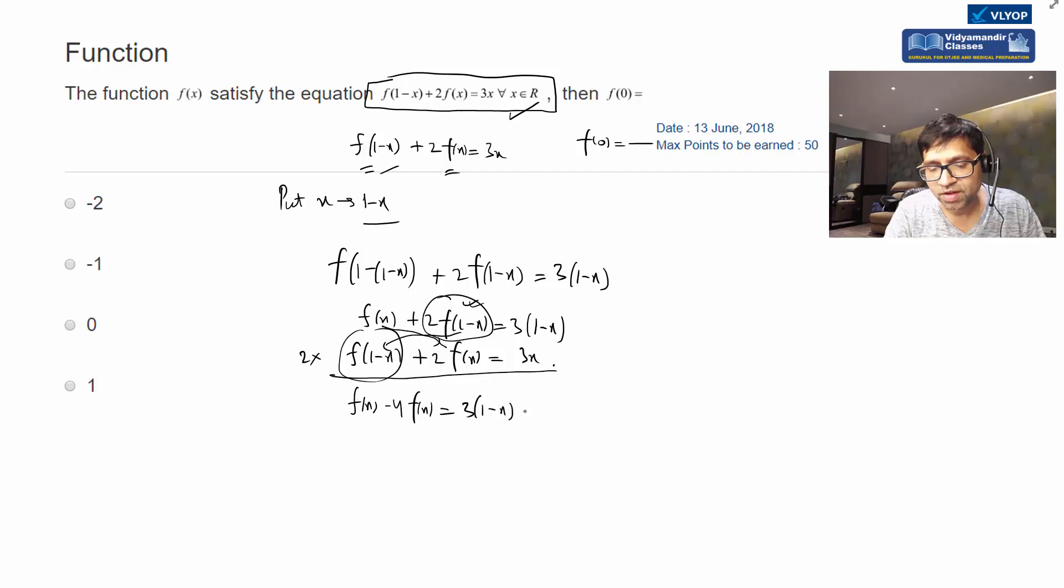On the right-hand side, 3(1-x) minus 6x. So if you simplify this, minus 3f(x) equals to, if I simplify this...